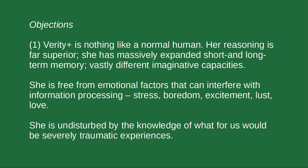One problem is raised by Don Loeb in his article 'Full Information Theories of Individual Good.' Why should we care about what the idealised version of ourselves would want to want? We should notice that entities that are perfectly rational and have full information are radically different from us. Their reasoning abilities will be far quicker and more efficient. They will have massively expanded short and long-term memory, vastly different imaginative capacities. They would need to know what it's like to experience all possible things available to the agent. And they must be free from the emotional and affective factors that can interfere with information processing — things like stress, boredom, excitement, nervousness, lust, love.